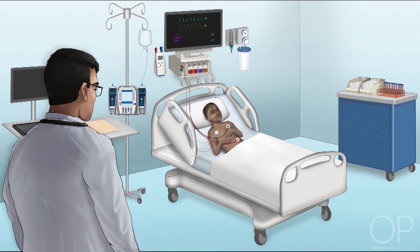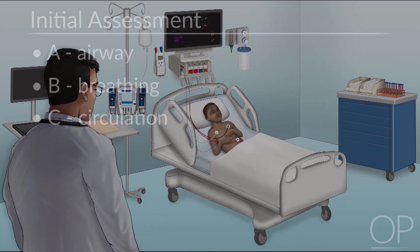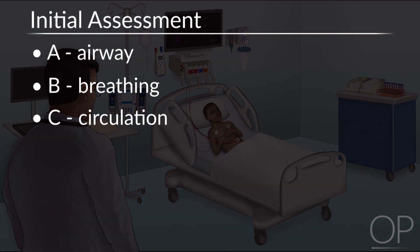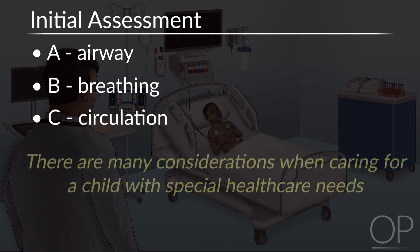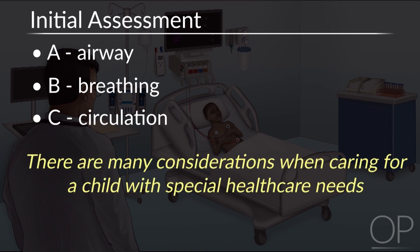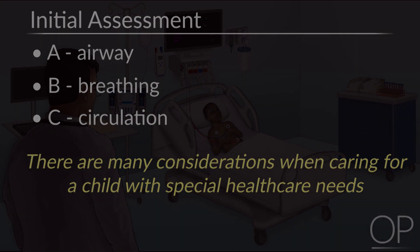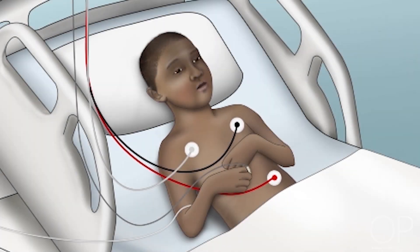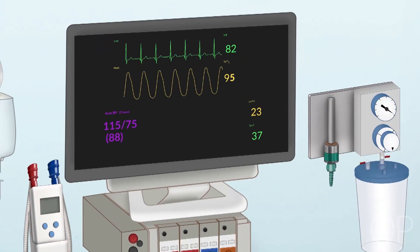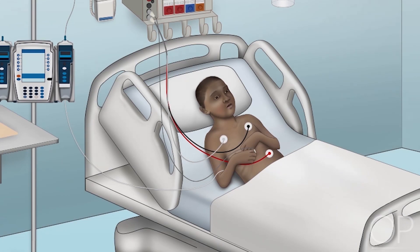First things, as you probably know, you start with basic airway, breathing, and circulation. It applies to any child you're seeing, but there are lots of things to consider with the child with special healthcare needs. You also have to wonder: what is it that you were called for? Is the patient working hard to breathe, or are they not breathing enough? Are they on a monitor? You need to get your first gestalt assessment.